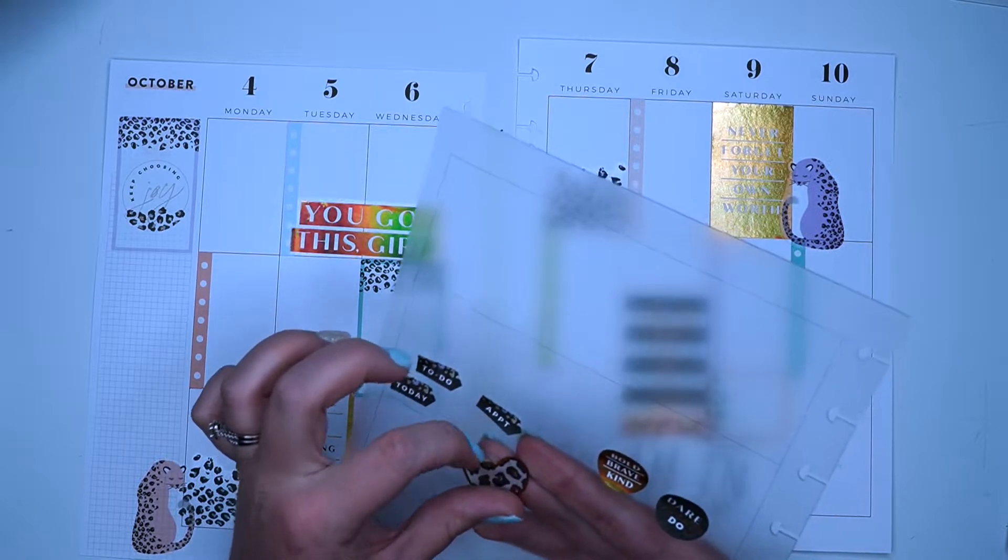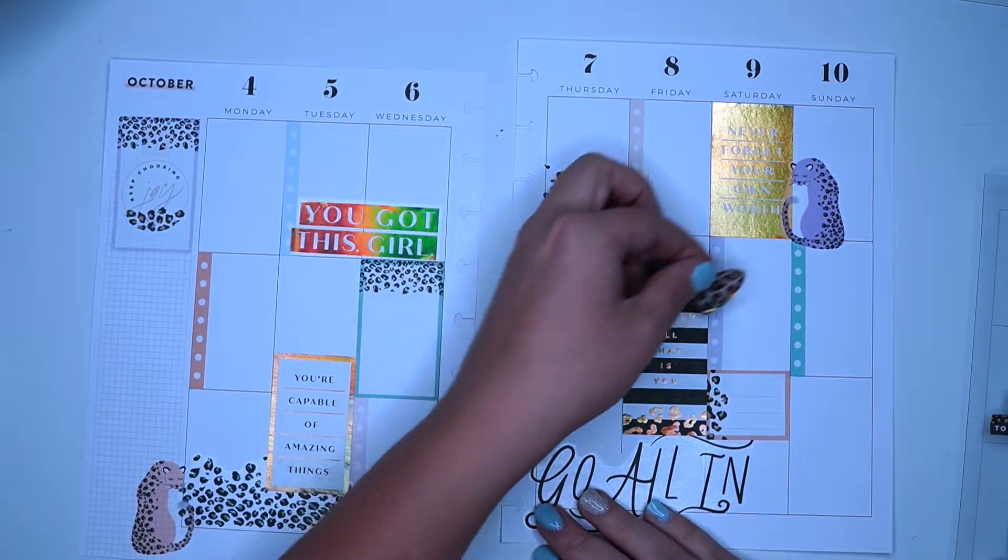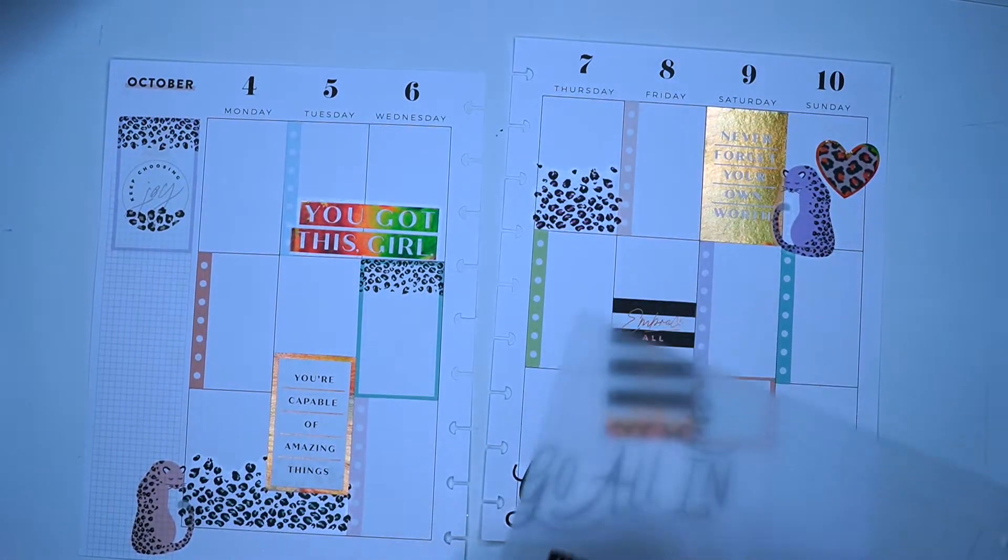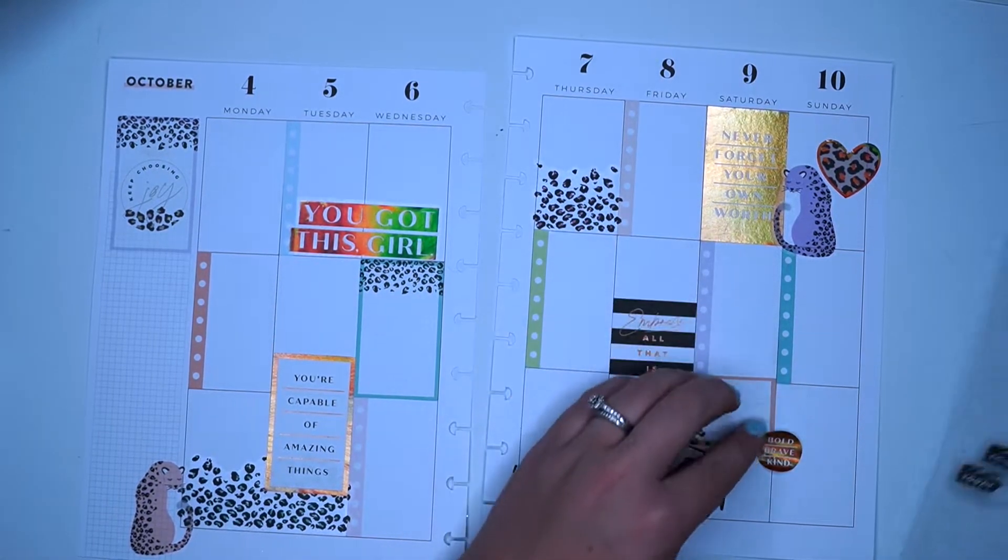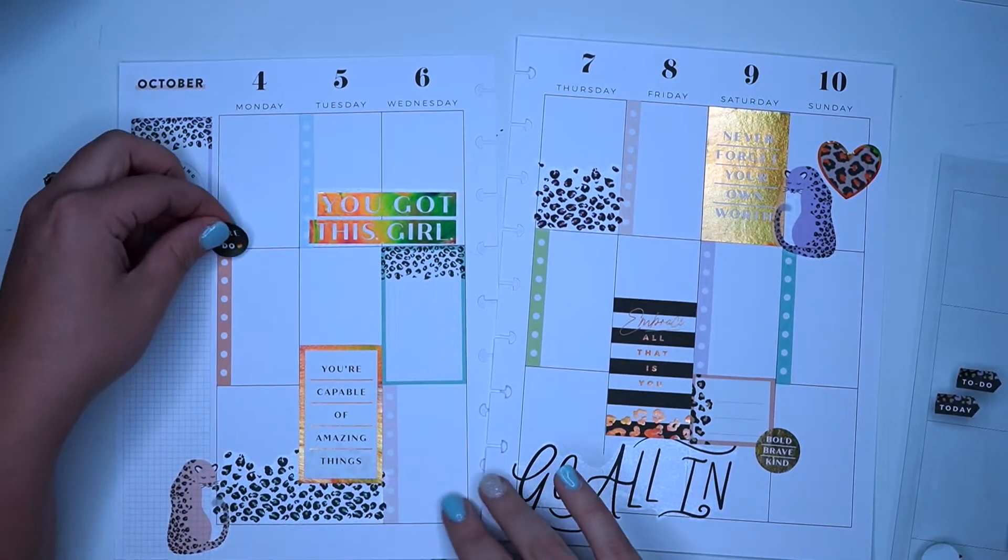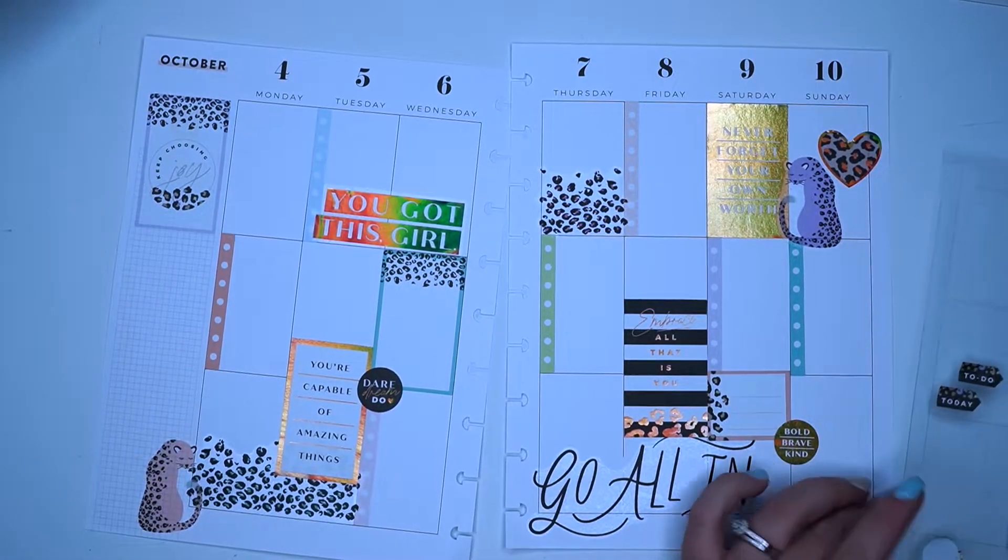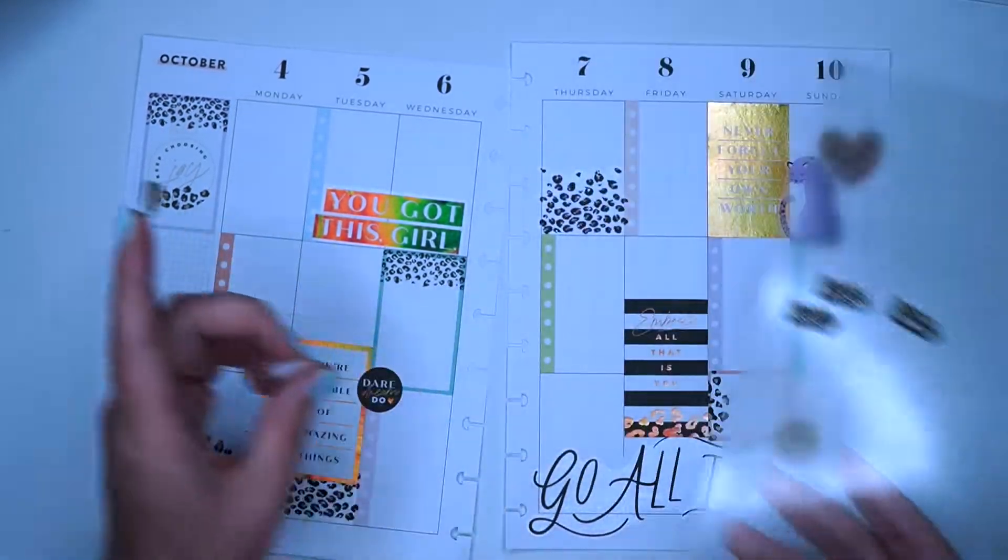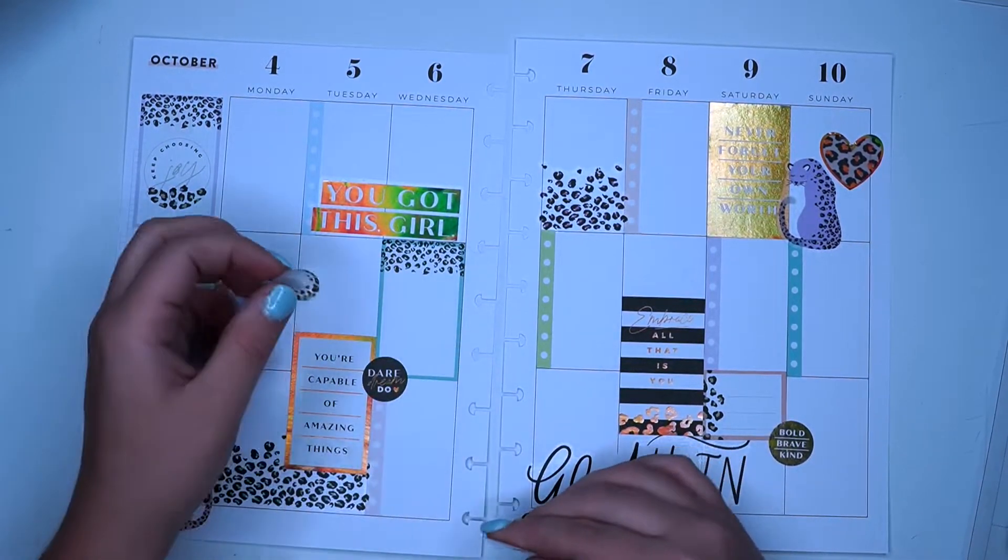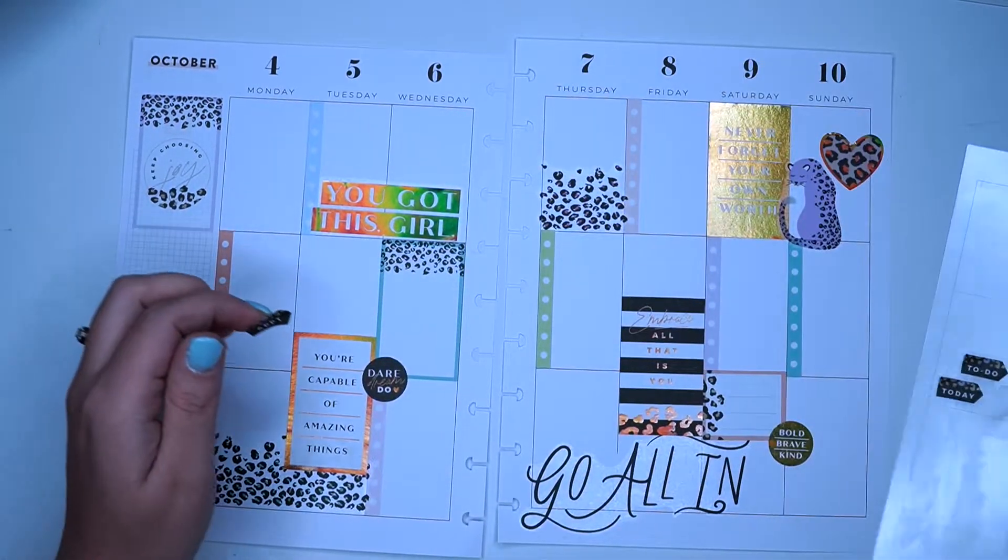I need to get this cute heart off. Seriously, this heart is so cute. I think I'm going to put it up here by this leopard guy. I'm going to put this brave, bold, brave kind, and this dare dream do. And then I do have two other circles that match the colors of the spread. I kind of want these in a box and I can write like a time in there. That's a really good idea.